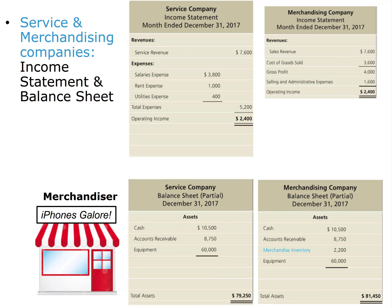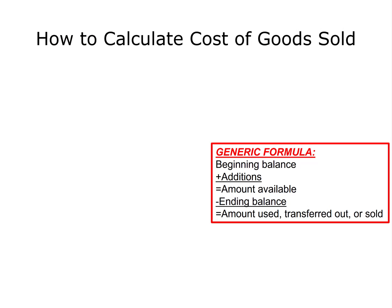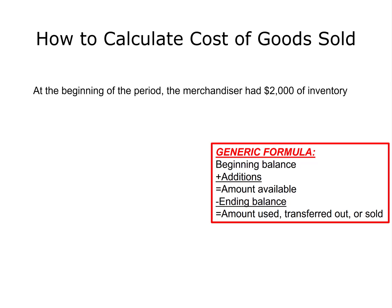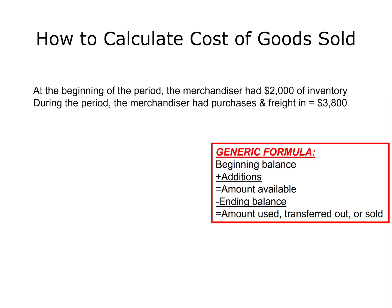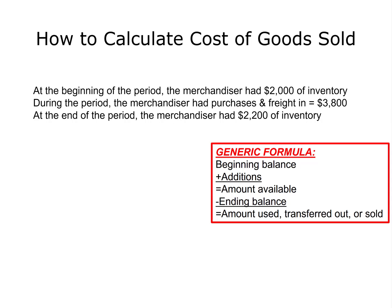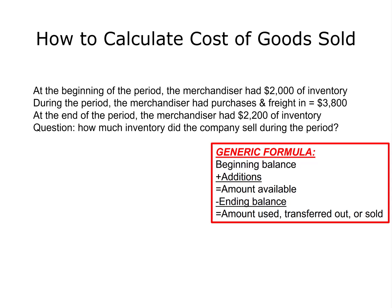Now let's look back at the slide showing the merchandiser's income statement and balance sheet. The service company's income statement and balance sheet are shown on the left for comparison. Notice the merchandiser's income statement shows cost of goods sold of $3,600. Let's calculate that. At the beginning of the period, the merchandiser had $2,000 of inventory. During the period, they had purchases and freight in of $3,800. At the end of the period, they had only $2,200 of inventory. Pause the video and use our generic formula as your guide.